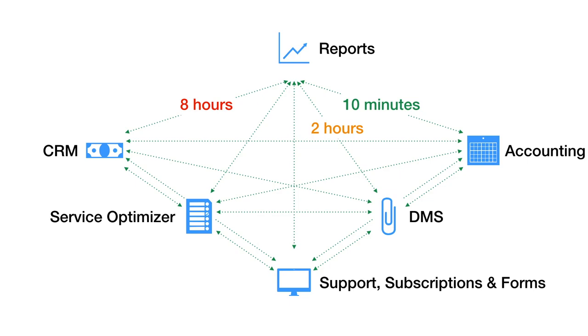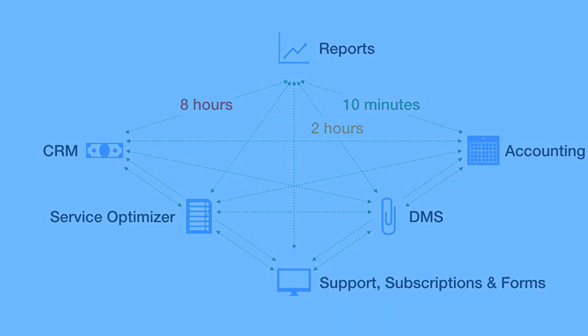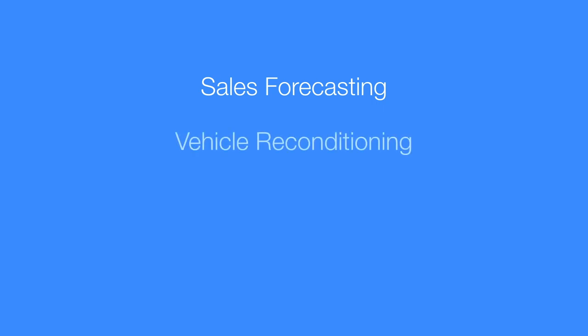Data incongruence issues like this cause lost time and money across all dealer operations, but are particularly bad in sales forecasting, vehicle reconditioning, financial reconciliation, and title accountability.